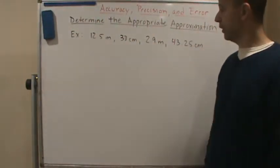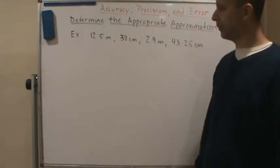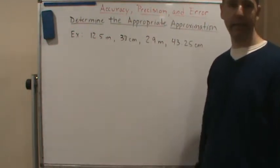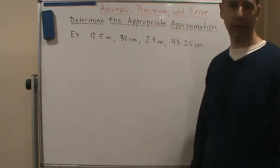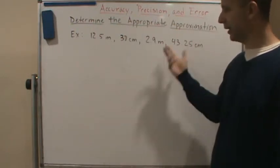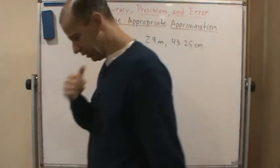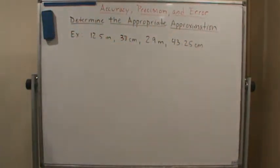Okay, welcome. And in this video we're going to do an example of finding the appropriate approximation of a calculation. So what we're going to do is we're going to add all of these measurements, and then we're going to round it to the appropriate approximation based on the measurements.